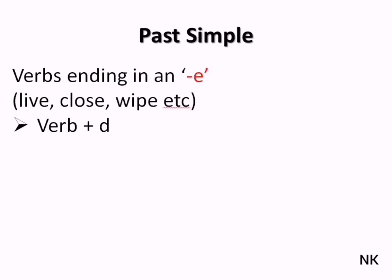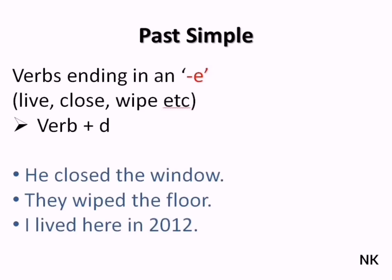We need to pay attention to verbs that end in an 'e' such as leave, close, and wipe. With these verbs we use the infinitive form of the verb but we only add a 'd'. For example: he closed the window, they wiped the floor, I left her in 2012.